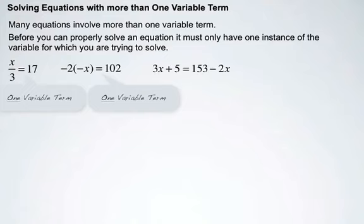However, if we have 3x plus 5 equals 153 minus 2x, this is a two variable term because we have a 3x on one side that has an x and a negative 2x on the other. Two terms have an x.